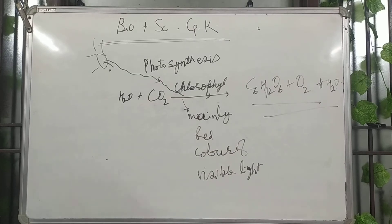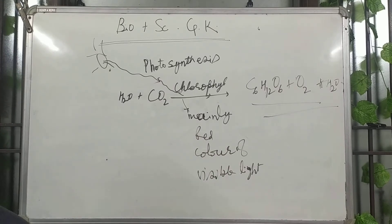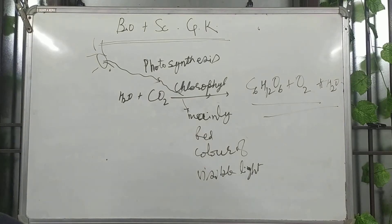Next question: AIDS is due to what? Options are virus, bacteria, fungus, or worms. AIDS is due to virus — specifically HIV.